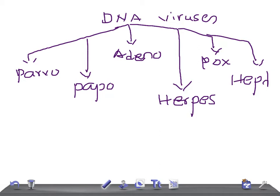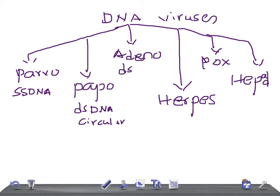Parvovirus is a single-stranded DNA virus. Papovirus is double-stranded DNA and circular. Adenovirus is double-stranded DNA but linear.